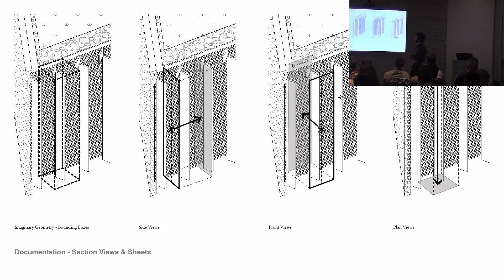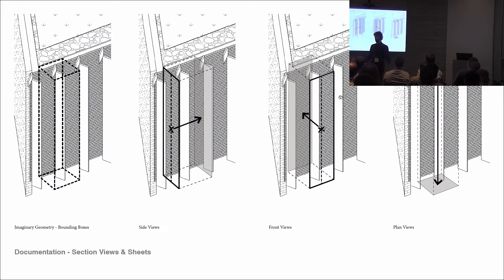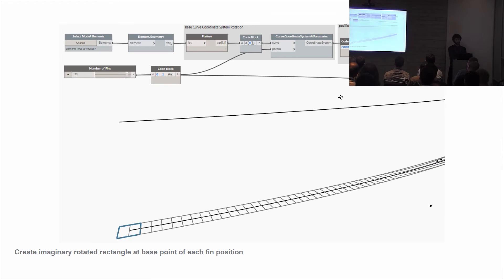As soon as you imagine that we could describe a view for every single one of these things, we can start to document all the information about them automatically. But you've got to keep in the back of your mind that there's an imaginary geometry of a bounding box around these elements. We're going to create the side views here — I've done the front and the plan, which you can see in detail later if you like.